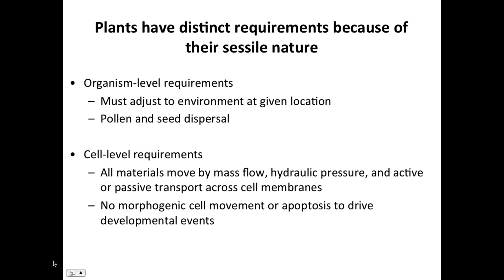All materials have to either move by mass flow, by changes in hydraulic pressure. For example, this is how water gets from the soil up into the upper parts of the plant — it's all through hydraulic flow. Mass flow is concentration-based. And then there's a series of active and passive transporters that can move molecules across cell membranes to affect long-distance transport of molecules going from cell to cell across the body of the plant.